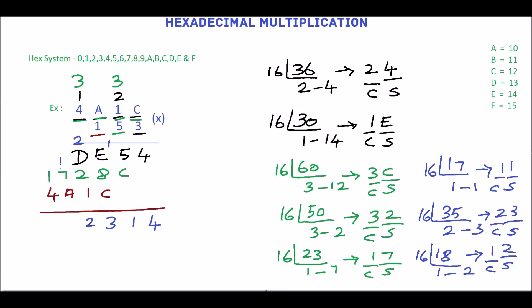Carry 2 over the next digit. Next add 1 plus 7 plus A, which is 18. We will convert 18 — the quotient is 1 and the remainder is 2, so the equivalent hex number is 12. So 2 is the sum and 1 is the carry. Write 2, carry 1. Then 1 plus 1 plus 4 is 6. So the final answer is 622314.